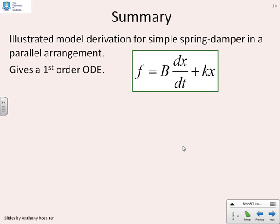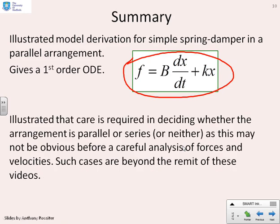So a summary. We've illustrated the model derivation for simple spring dampers when in a parallel arrangement. And what you get, you get equations a bit like this. Force equals b times dx dt plus kx, i.e. it's a simple first-order differential equation. We've also illustrated that you do need to be careful when deciding whether the arrangement is parallel or series, or neither, some form of mix. And this might not be obvious unless you do a careful analysis of forces and velocities and displacements. These more advanced problems are beyond the remit of these videos.